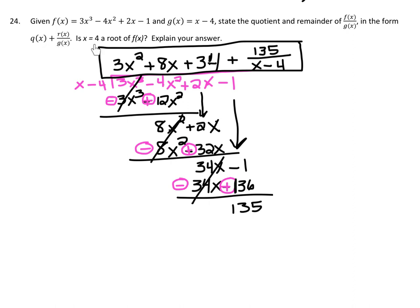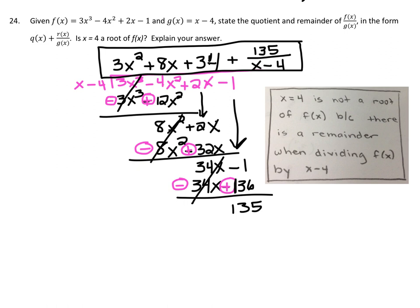Is x = 4 a root of f(x)? If x = 4 were a root, dividing by x − 4 would leave no remainder. But we got a remainder of 135, so x = 4 is not a root of f(x). We can state: x = 4 is not a root of f(x) because there is a remainder when dividing f(x) by x − 4.